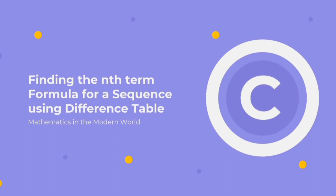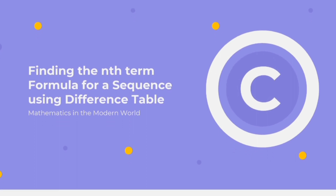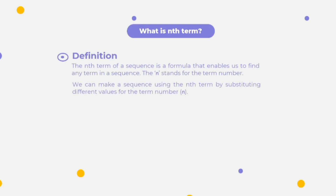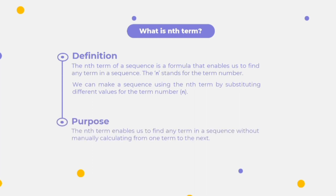In this video, we're going to discuss finding the n-term formula for a sequence using a difference table. The n-term of a sequence is a formula that enables us to find any term in a sequence. The n stands for the term number. We can make a sequence using the n-term by substituting different values for the term number, and it enables us to find any term without manually calculating from one term to the next.